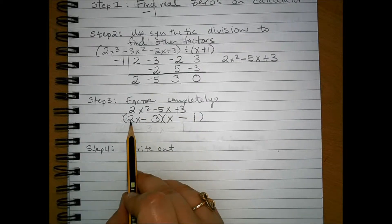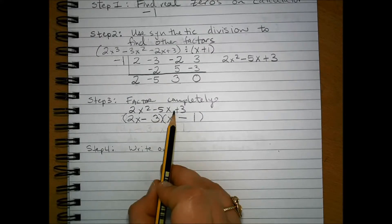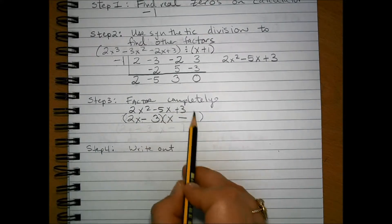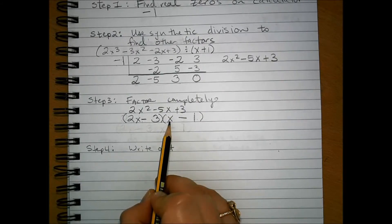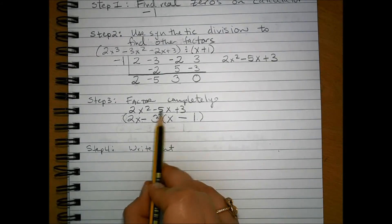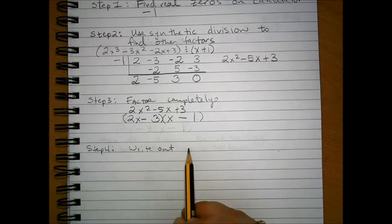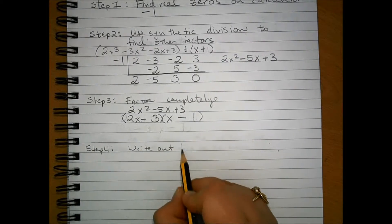I know this because I only need to check test the middle term. 2x times negative 1 is going to give me negative 2x, and if I subtract 3x from that, I get negative 5x.